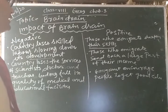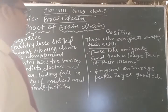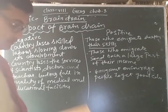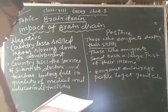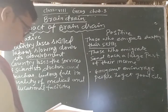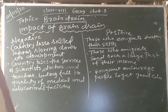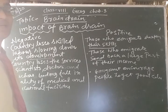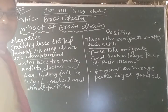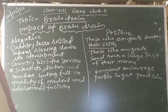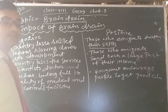Immigrants also encourage people to get good education, training, and develop skills. This was the impact of brain drain and the last topic of Chapter 3. In the next video we will discuss the new chapter of the second term — urbanization.